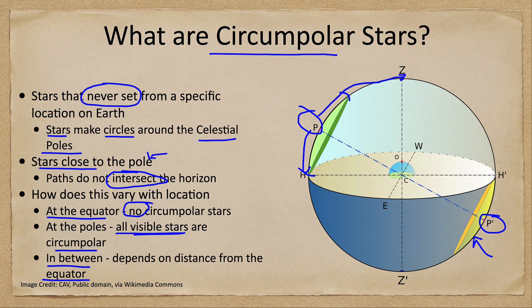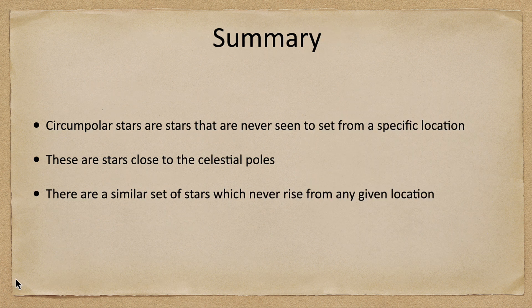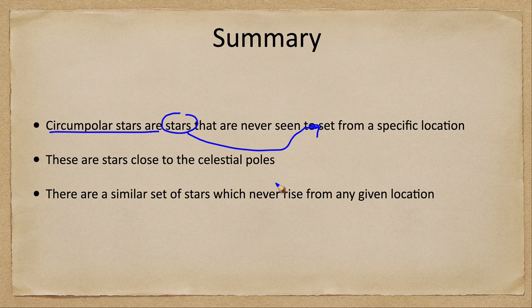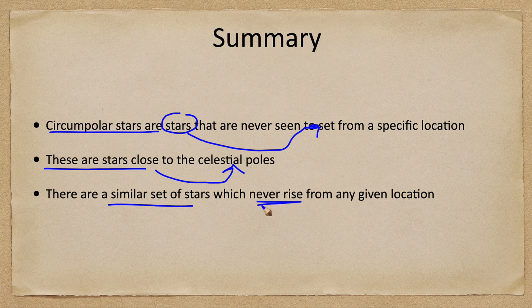To summarize: circumpolar stars are stars that are never seen to set from a specific location. These are stars that are close to either the north or south celestial pole. There is a similar set of stars that never rise from any given location — stars that are never visible. The exception is the equator, where every star would be seen to rise and set over the course of a day.